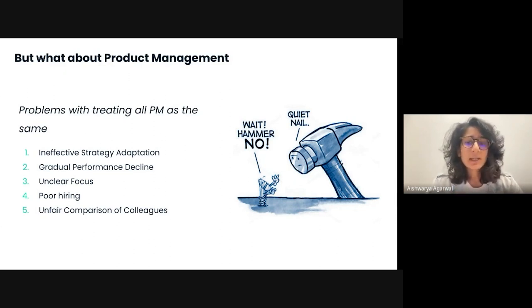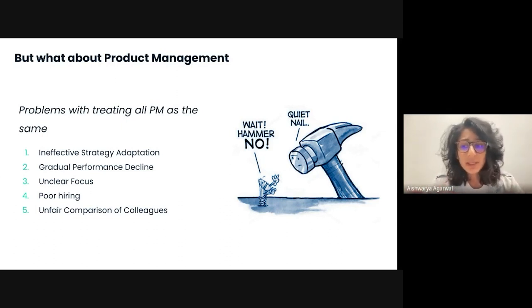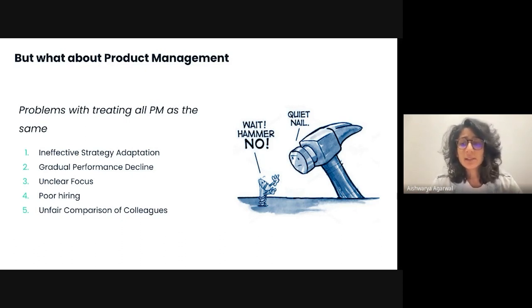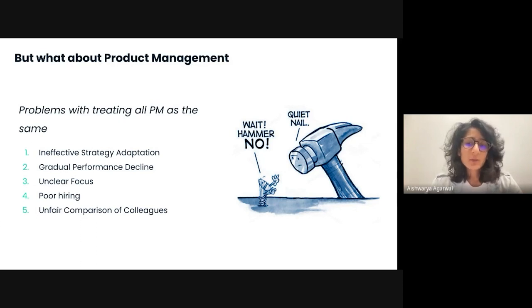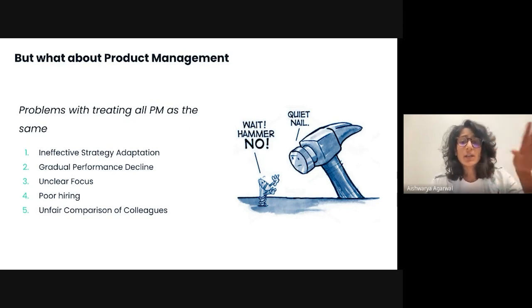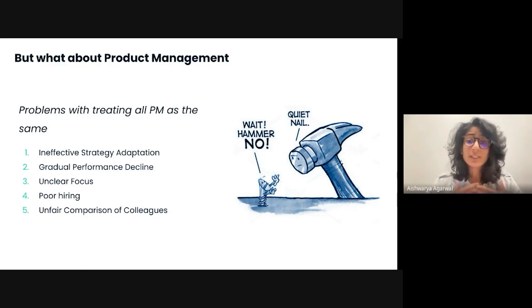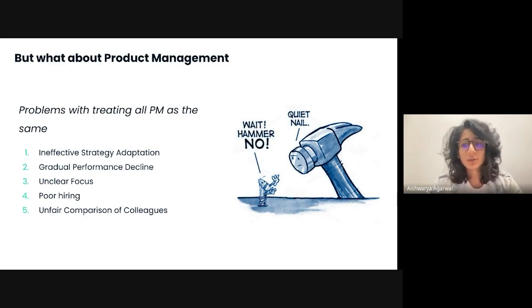The second problem is performance decline. A mismatch of strategies can affect the PM's performance — they will struggle to deliver results and will ultimately begin to doubt themselves. A payments PM might feel out of depth when asked to find the total addressable market and come up with a product that fits the market. Third, unclear focus. Imagine you're a growth PM who is brought on as a PM for a fast-growing product, responsible for the product platform so that partner teams can integrate within it. You don't know what you should focus on — should you do experimentation and grow the product, scale product delivery and support partner teams, or focus on launching features on your own? You know your skills, but you don't know the actual and immediate requirement for this role.